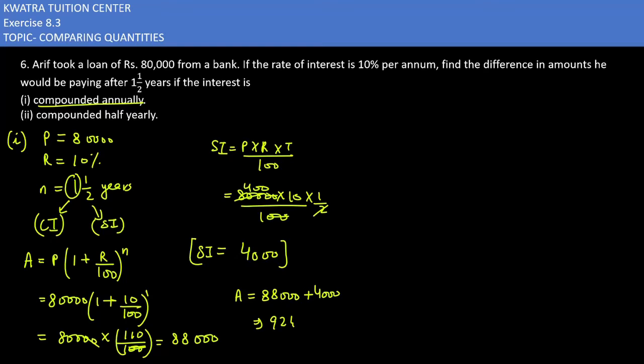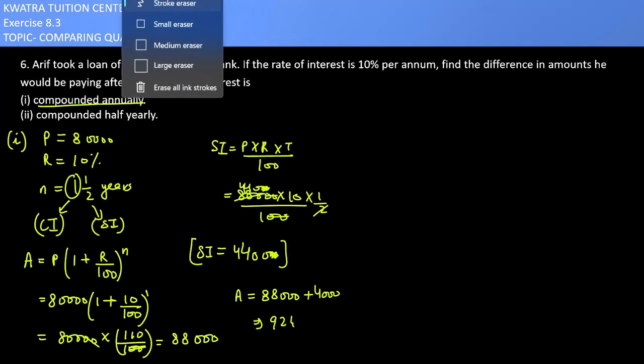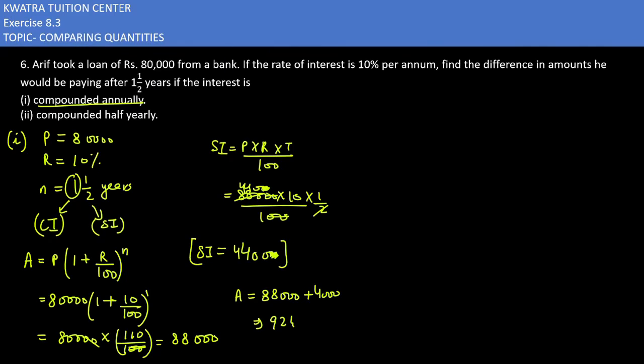Sorry, this is 88. So 440 into 10 will give you 4,400 as simple interest. Adding 4,400 plus 88,000 will give you 92,400. This is the total amount you get.